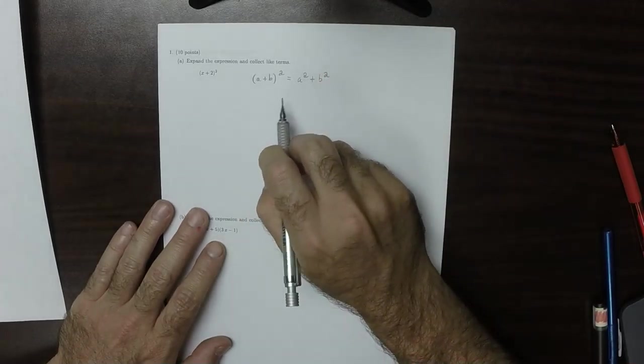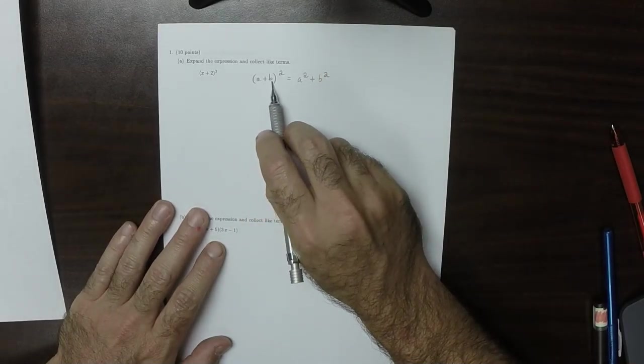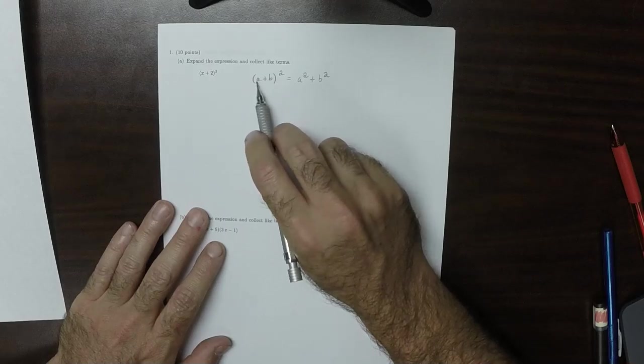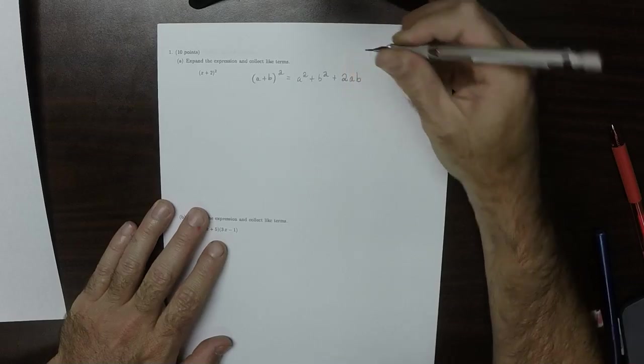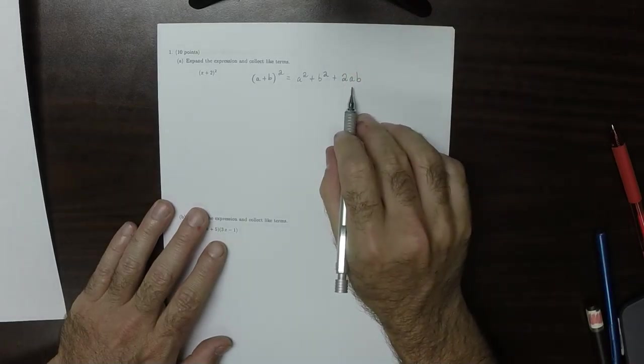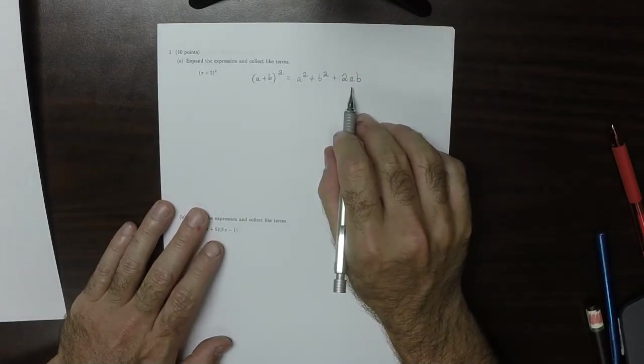But then, because of the cross terms, you'll get an a times ab, and ab times an a, so then you'll get plus 2ab. So this 2ab is what students most frequently forget.